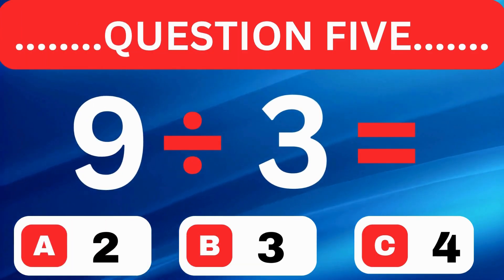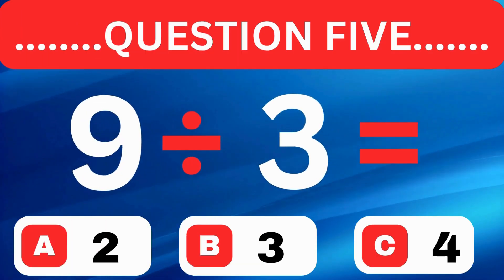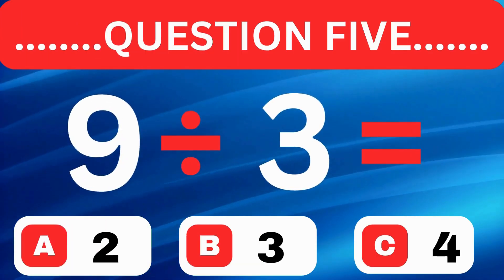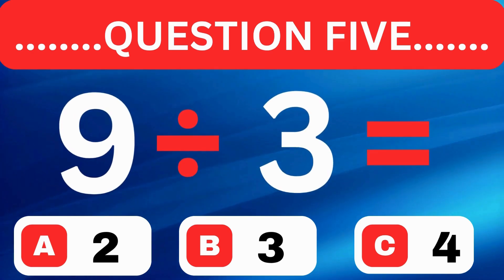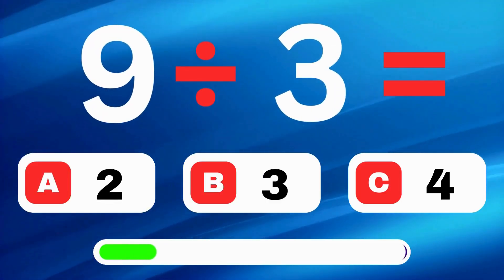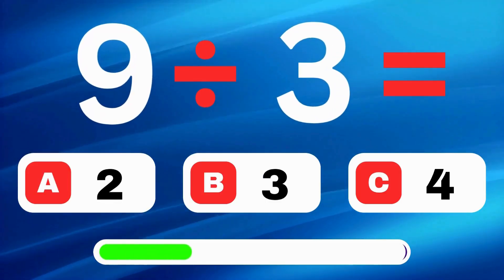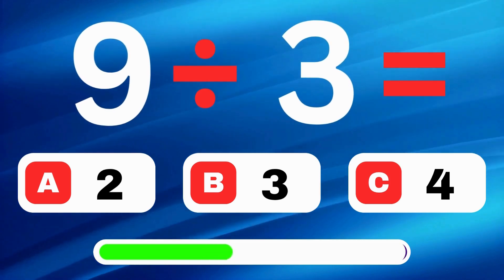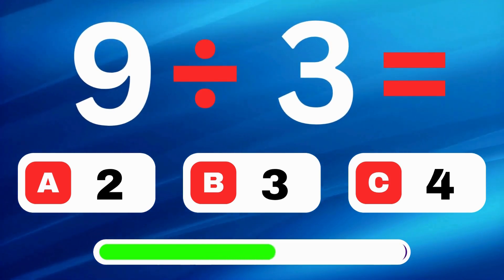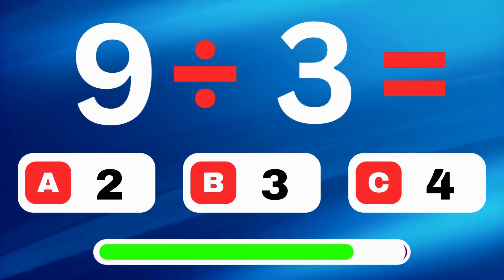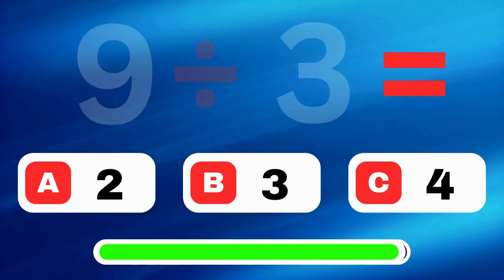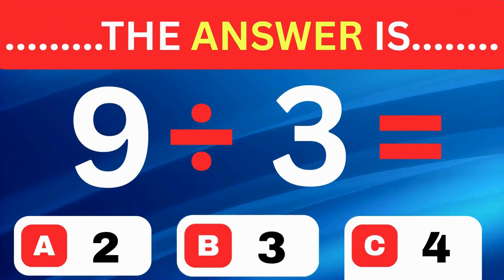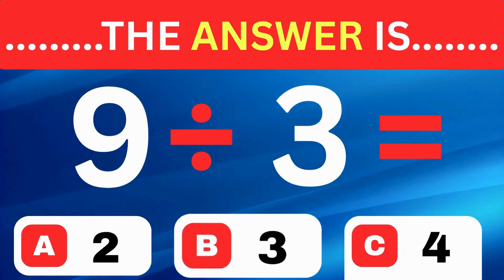Question 5. What is 9 divided by 3? A, 2. B, 3. C, 4. The correct answer is B, 3.